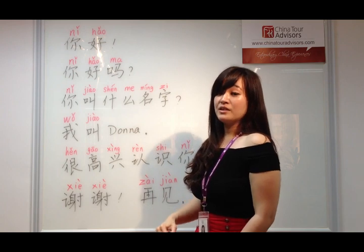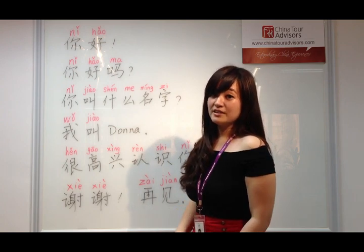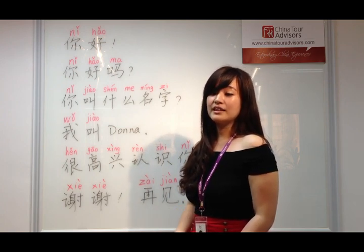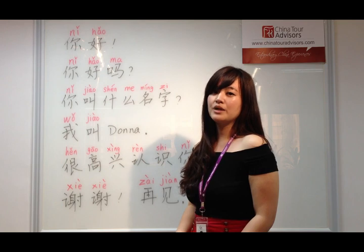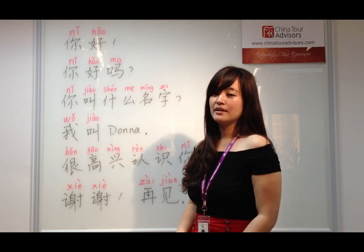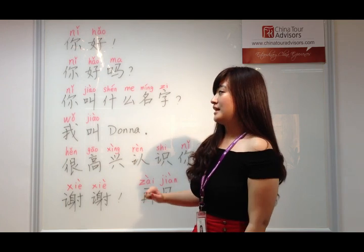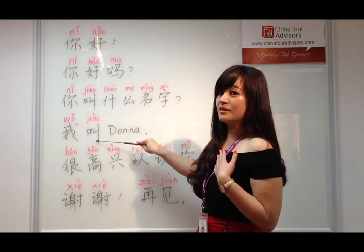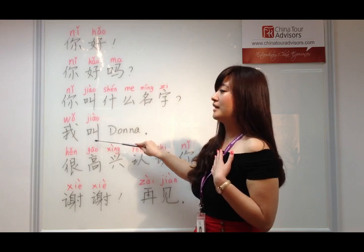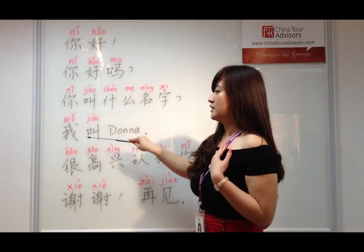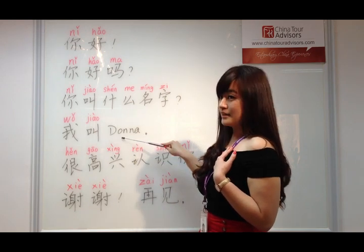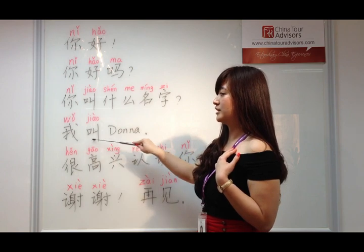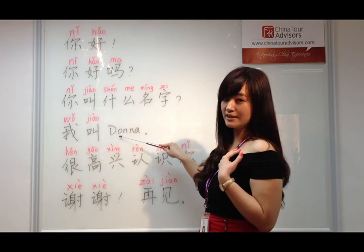Once you've asked for the person's name, you probably want to introduce yourself and say your own name. So you say 我叫. My name is Donna, so I would say 我叫 Donna. One more time: 我叫 Donna.